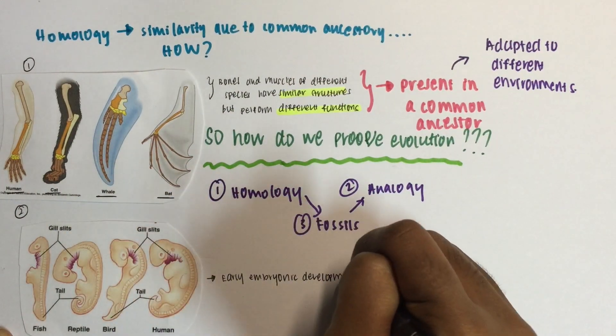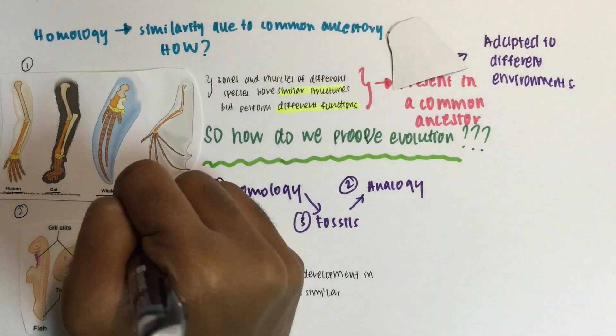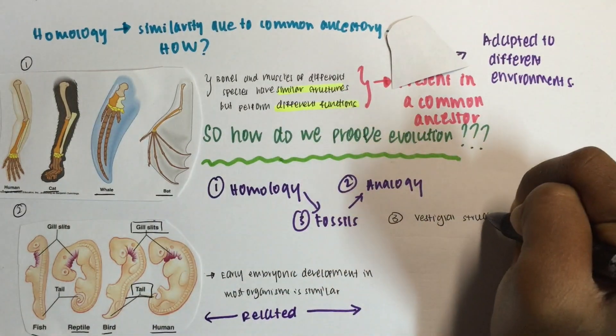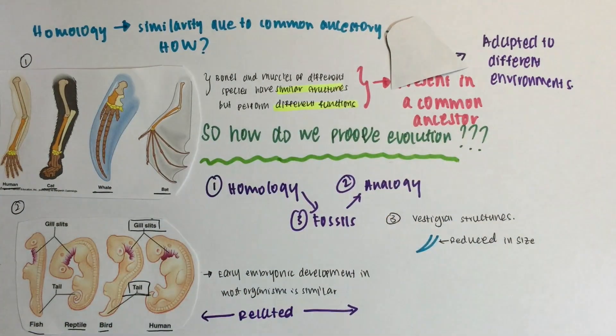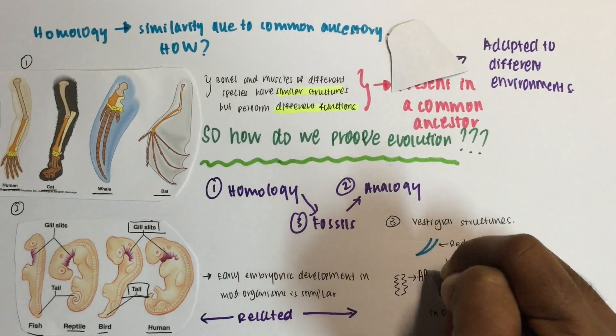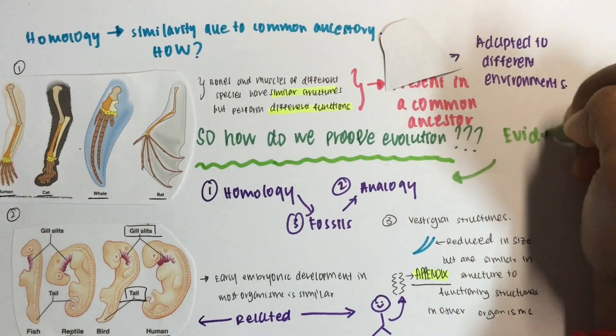On the embryonic level, these four organisms have gill slits and tails in their embryo, which is a homologous structure for all these organisms. The last homology is the vestigial structure, which has no use and is reduced in form in our bodies. One example is the appendix in humans, which has no apparent use.